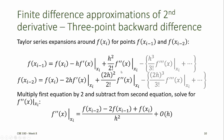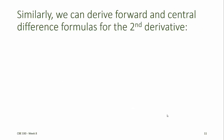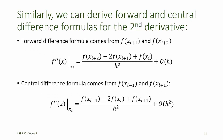Because solving for the second derivative of f requires dividing by 2h squared, we end up with a truncation error of order h. We can similarly derive forward and central difference formulas for the second derivative. The forward difference method has a truncation error of order h, just like the backward difference method. The central difference formula uses Taylor series expansions to predict the points at xi minus 1 and xi plus 1, and results in a truncation error of order h squared.